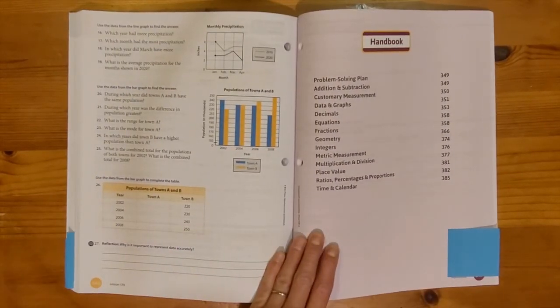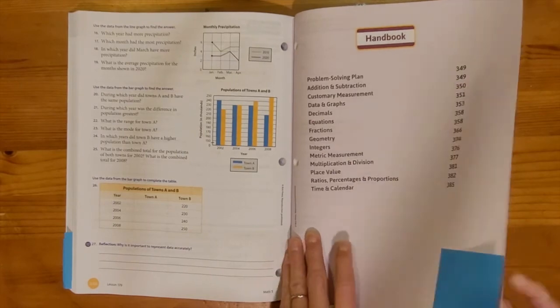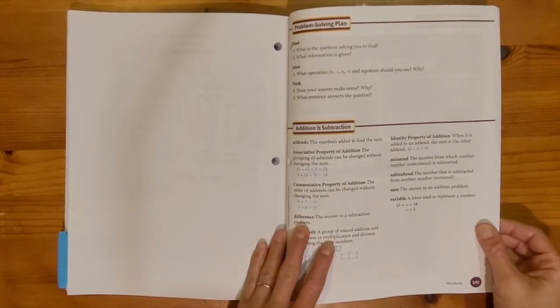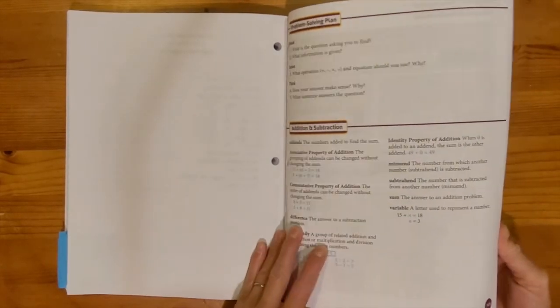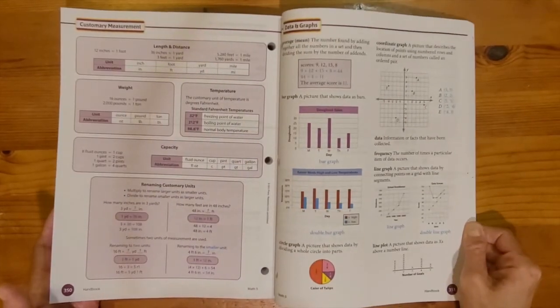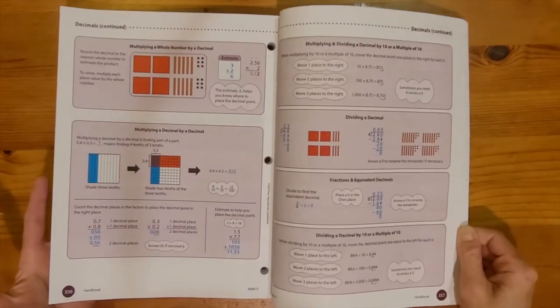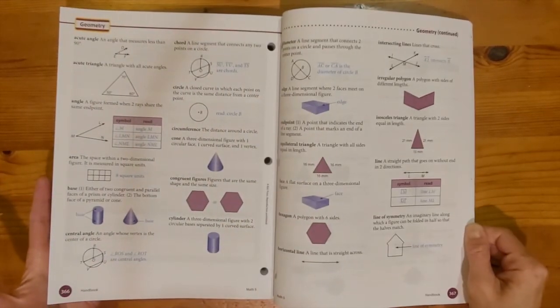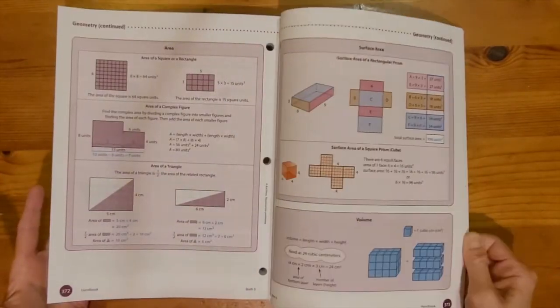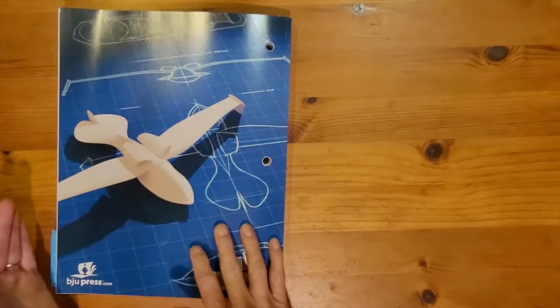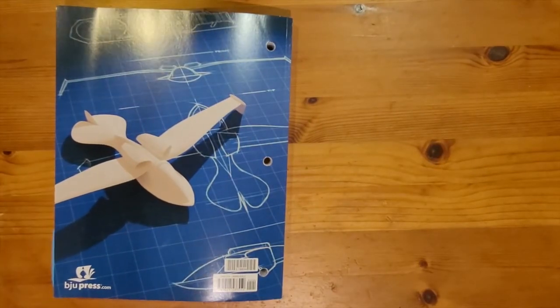And I want to go to the very back. This is very neat. This is your handbook. So these are basically little cheat sheets. If you don't remember how to do something, there's probably a section in here to give a quick review of how to do it. And that is our Math 5 worktext.